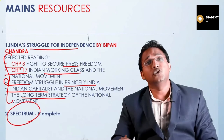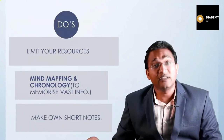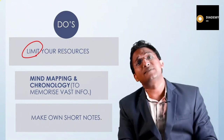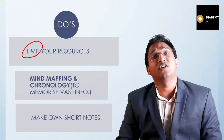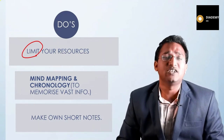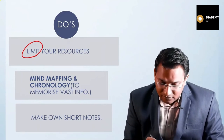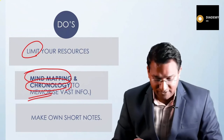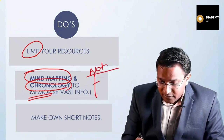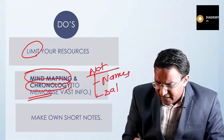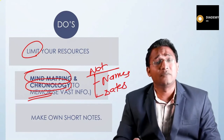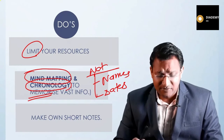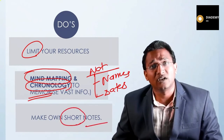Some do's: limit your resources. History does not change, and Bipin Chandra and Spectrum are favorites with UPSC — you can solve about 80% of questions from these books. Make mind maps and chronology maps to help memorize vast information in a simplified manner. However, do not focus heavily on memorizing names and dates; important ones will be repeated multiple times in the books and you will remember them automatically. Make your own short notes to help revise efficiently before the examination.